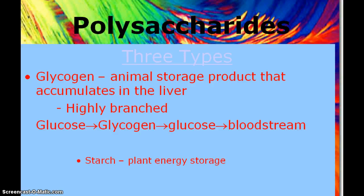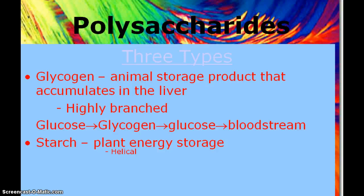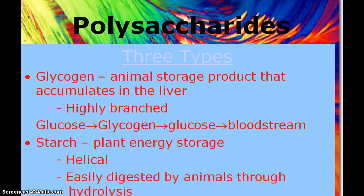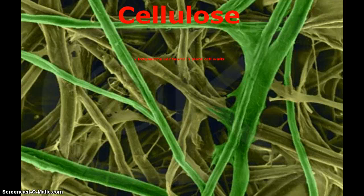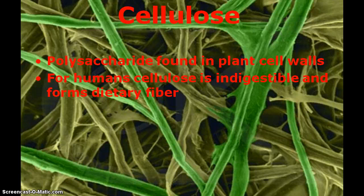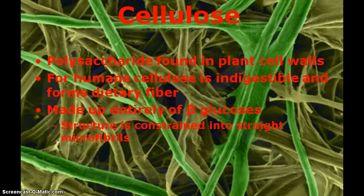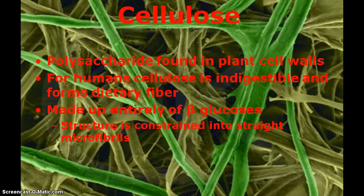Starch is another polysaccharide that's only made in plants, but we can digest it. It's got a helical structure and it's pretty easy to digest and useful to us. Cellulose, which this picture shows, is a little bit different. It's found in plant cell walls and insect exoskeletons, and it's indigestible to us and to most animals. It's almost entirely made up of these beta-glucoses, and it's really packed into these straight microfibrils that we can't really digest.